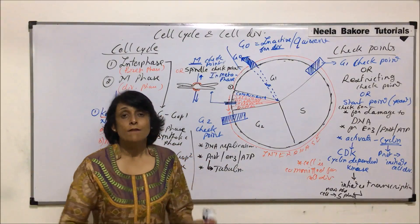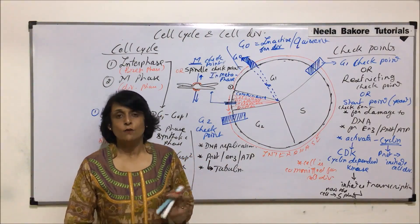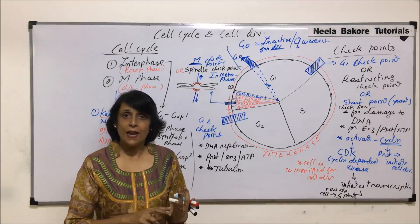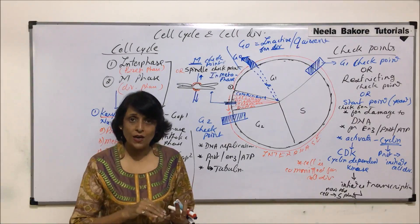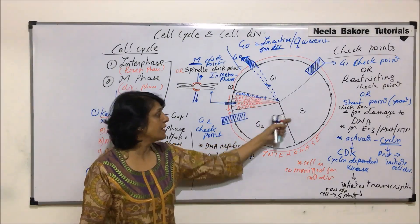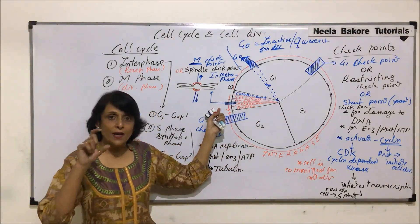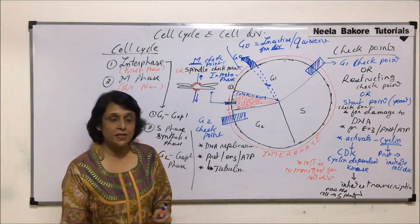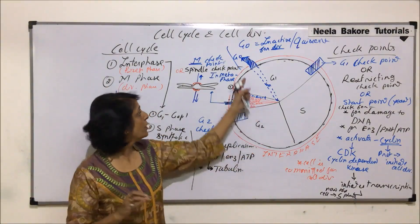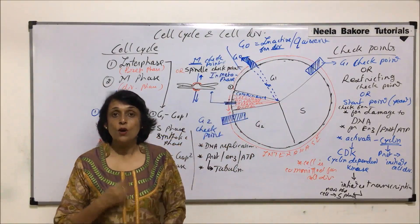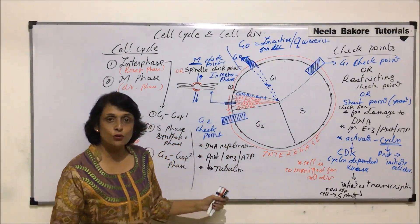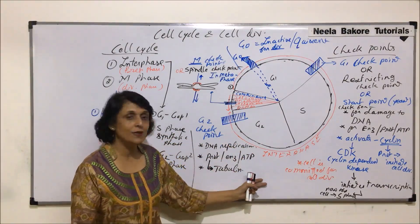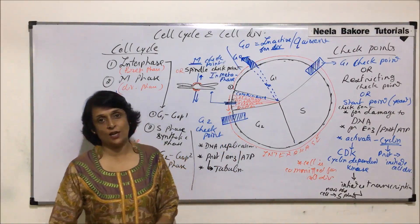With this, we have completely studied the cell cycle. We first saw what the cell cycle was, its stages — interphase and M phase — and the changes in G1, S, and G2. We also saw in short what happens in M phase, what G0 is, what differentiation and re-differentiation are, and how C value changes. And this last topic — the checkpoints — concludes our study of the cell cycle.